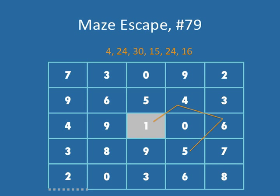The next products are fairly straightforward as well. I'm at 5 — the next product I need to make is 15. 5 times 3 would give me 15. Then 3 times 8 would give me a product of 24. And finally, I should be able to make the product of 16, which I can do by extending a line from 8 to 2. 8 times 2 is 16 and I'm done. Maze escaped.